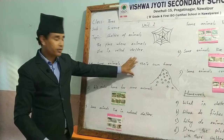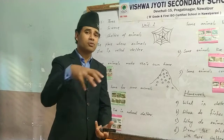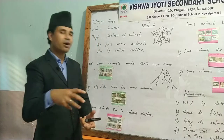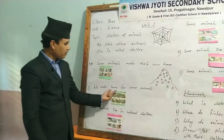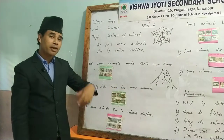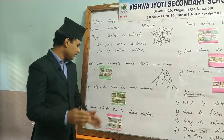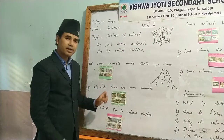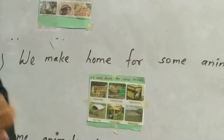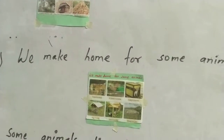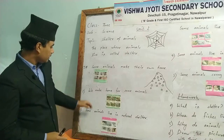Point number two: we make homes for some animals. These are animals that are very familiar to us and live along with us or that we rear. For example, a dog lives in a kennel. Cows and buffalo live in a shed. A horse lives in a stable. Hens live in a coop. These are examples of animals whose homes we make for them.